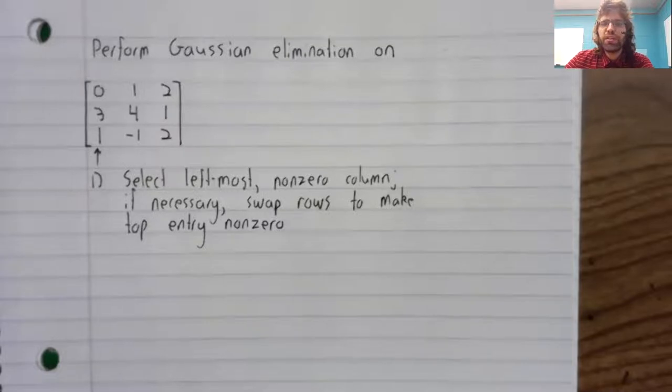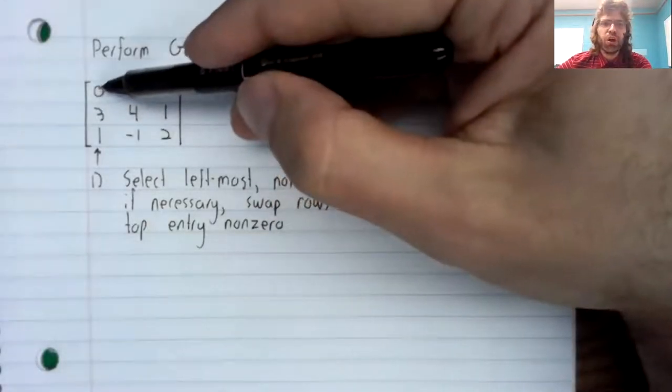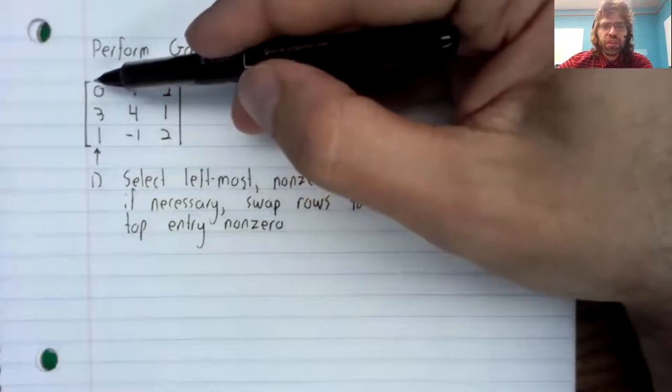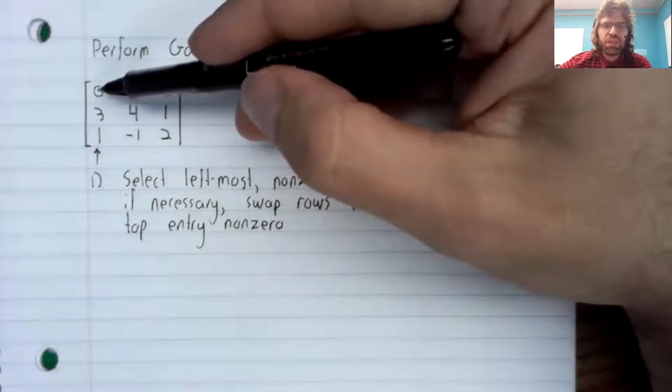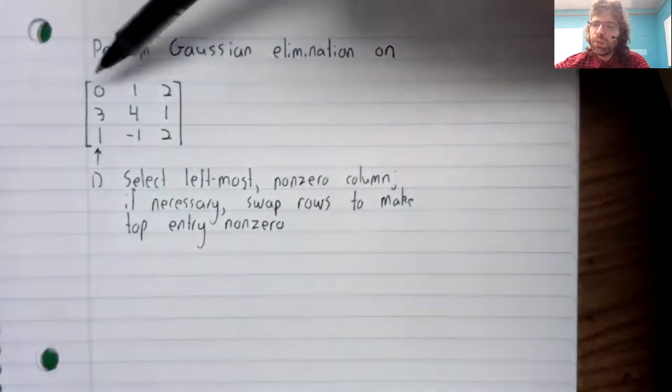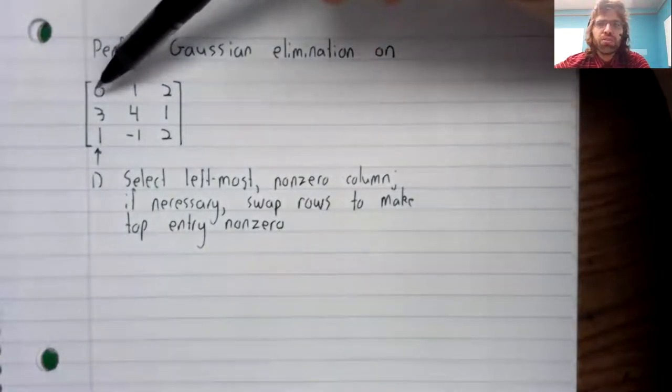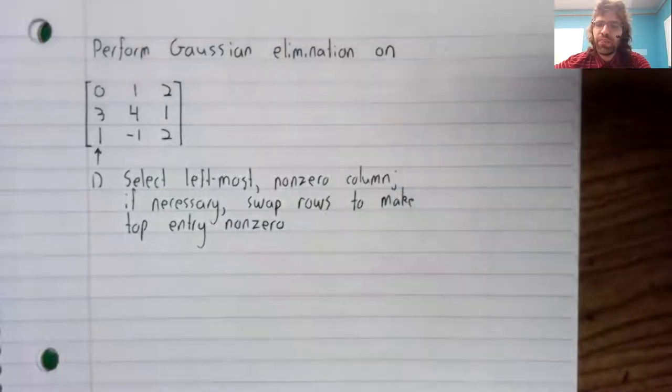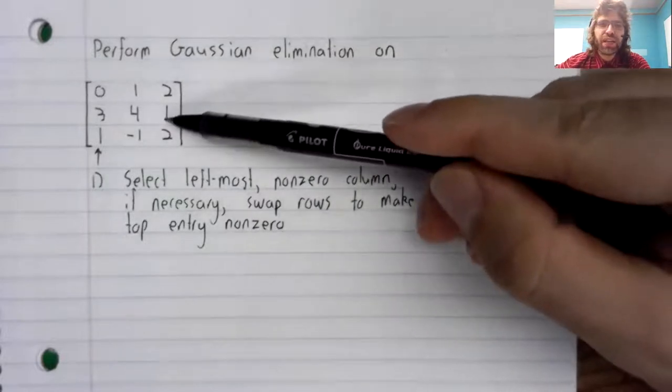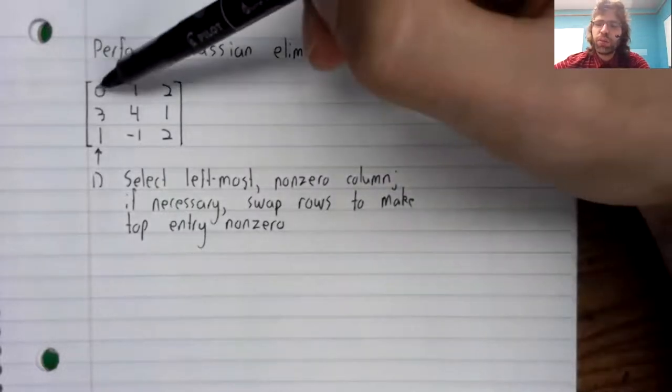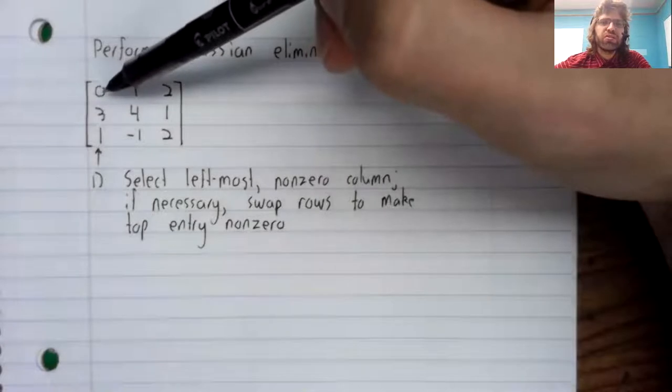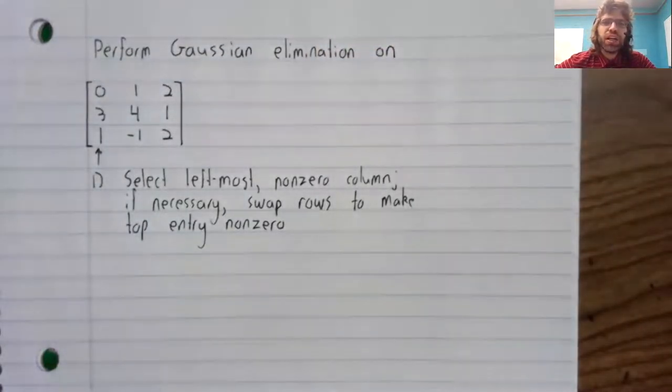swap rows to make the top entry non-zero. It doesn't matter what numbers here except that it's not allowed to be zero. We do have a zero here, but swapping rows is an elementary row operation. If we swap the first and the second, or the first and the third rows, that will give us something other than zero here. Let's swap the first and second rows.